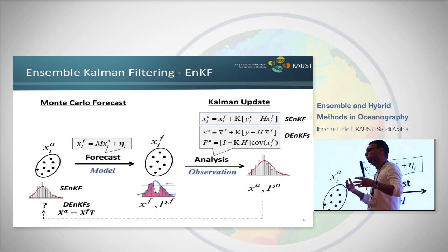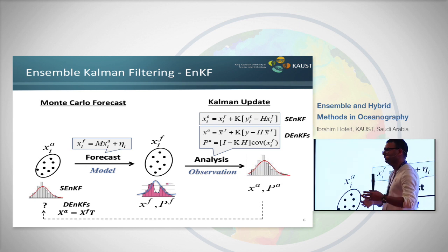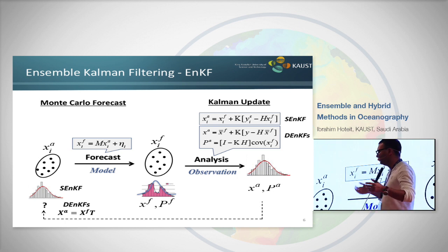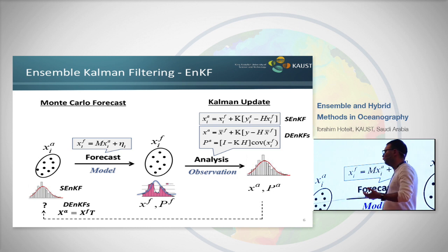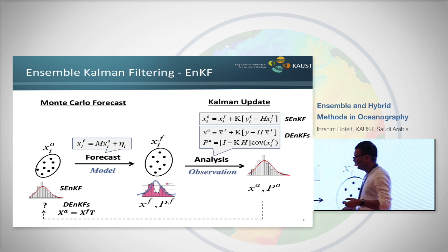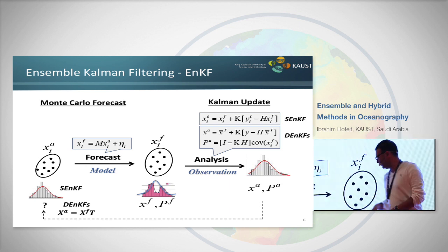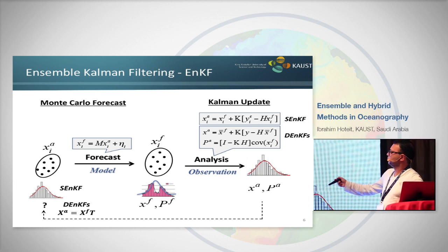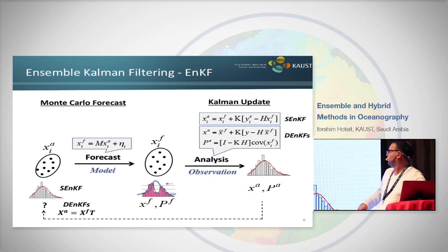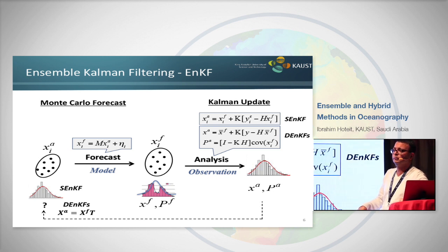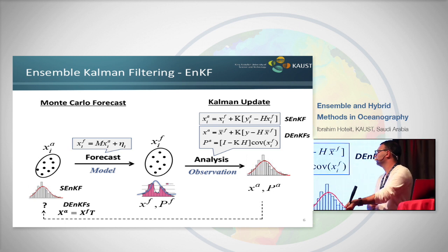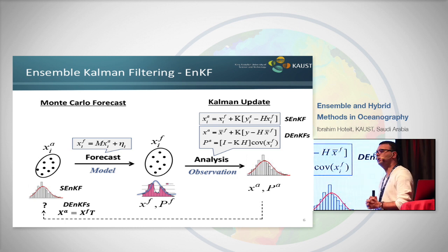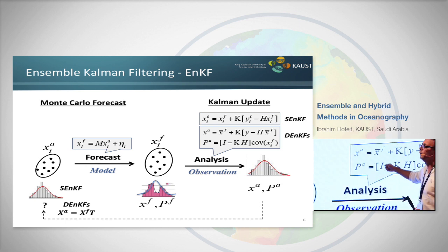There are two main approximations: first, I'm only taking the Gaussian part of the distribution; second, I can't take very large samples — there is a curse of dimensionality in a 10^8-dimensional space. We end up running 50–100 members, which is what we can afford. Surprisingly, it works very well. We run a small ensemble size, assume Gaussianity, and everything works well. This is what we call the deterministic ENKF. After the analysis step, I have a mean and covariance from which I need to resample for the next forecast cycle.